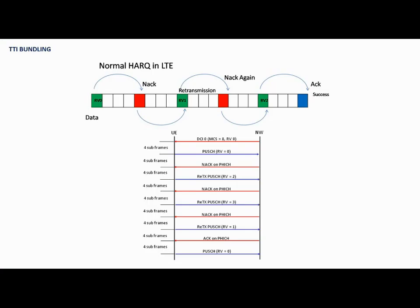In the normal control and message flow, when the network sends a grant message on DCI 0, the UE transmits PUSCH at only one specific subframe, which happens 4 ms after receiving the DCI 0.